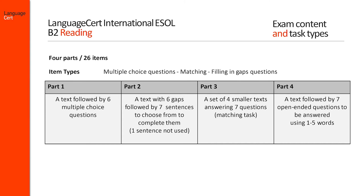There are three different item types: multiple choice questions, always offering three options — A, B and C — matching questions, and filling in gaps questions.